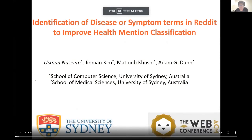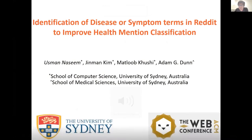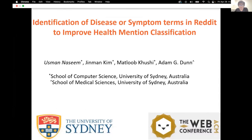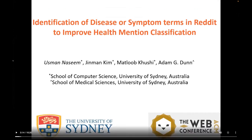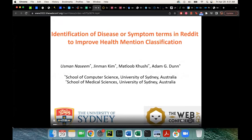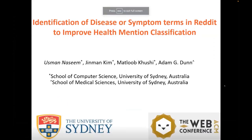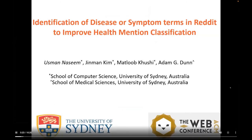Hello everyone. My name is Usman Nassim. I'm a PhD candidate at the University of Sydney, Australia. Today I'm going to present our work on identification of disease or symptom terms in Reddit to improve health management classification. This is a joint work with my PhD advisors Jinman Kim, Mataluk Hoshi, and Adam Dunn.